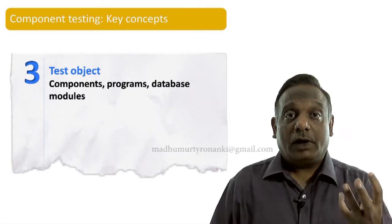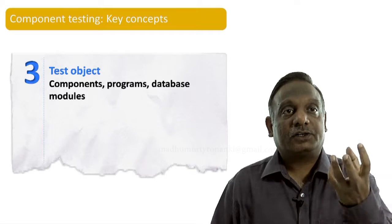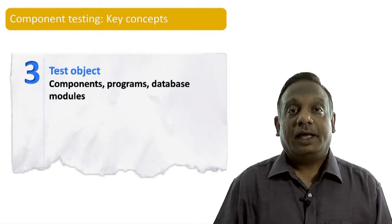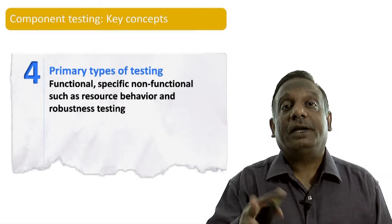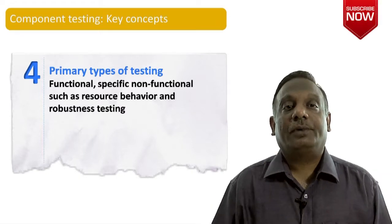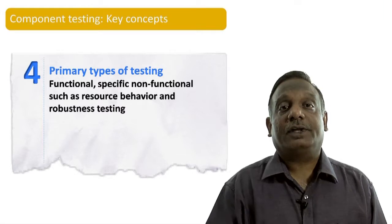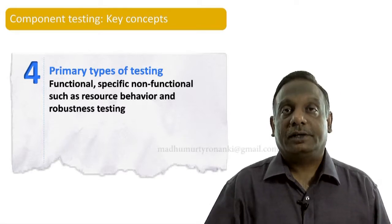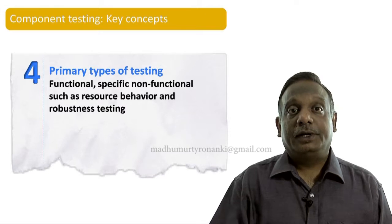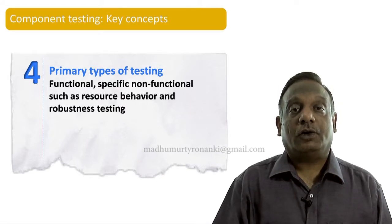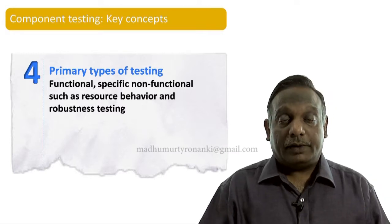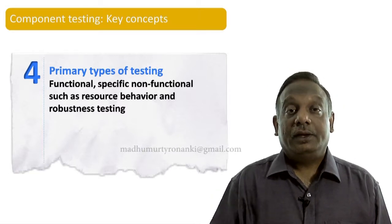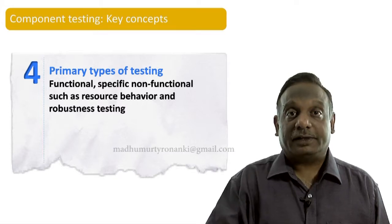The third item is the test object — what will be tested. The test objects are components, programs, and sometimes database modules. The fourth item is what primary types of testing will be deployed at the component level. We deploy functional testing as well as specific non-functional types such as resource behavior and robustness testing — for example, how memory and CPU usage are handled — so that programs run efficiently.